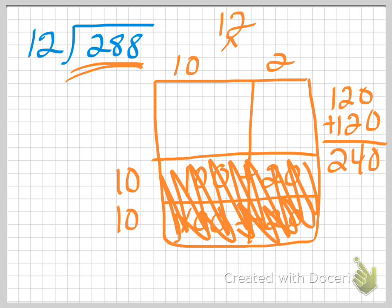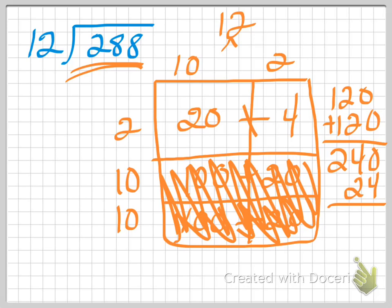So now I know I'm not going to add 10 again — that would be too much. So I'm going to try to add another number. Let me try 2. 2 times 10 is 20, and 2 times 2 is 4. So 20 plus 4 is 24. And adding that up: 240 plus 24... I've got 4 plus 2 is 6, and then 2... that gives me 264.